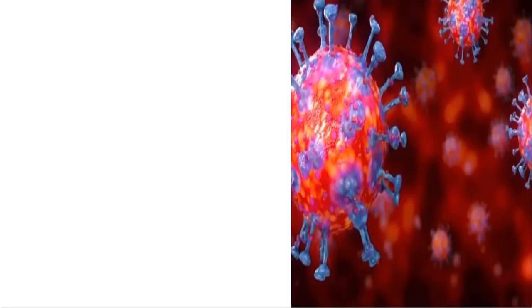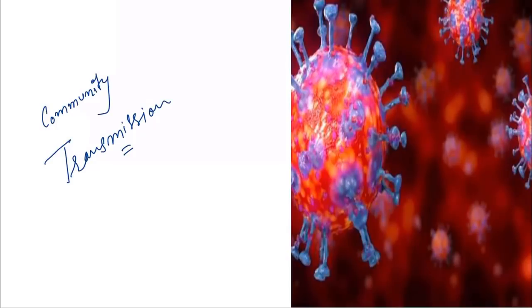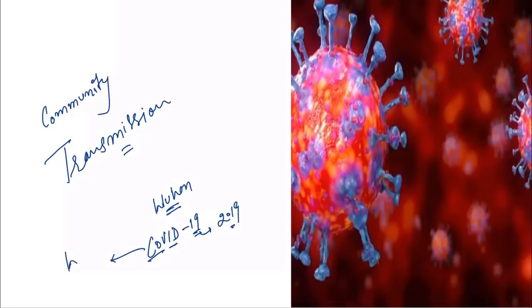Hello everyone. In this video, we are going to discuss what is community transmission and what are the different stages of spread of coronavirus. The outbreak of coronavirus started in Wuhan in China and later it was given the name COVID-19, that is coronavirus disease, and 19 because it started in 2019. The official name was given by WHO. It has been declared a pandemic by WHO. First we will discuss the difference between outbreak, epidemic, and pandemic, and then we will discuss the stages of transmission.